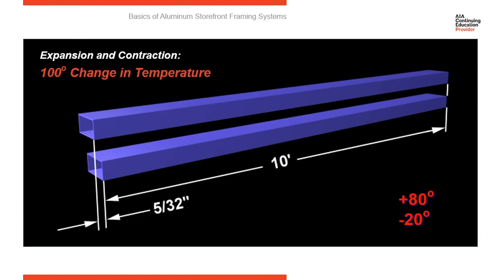Think about a nice spring or fall evening when it drops pretty cool during the night, but then the next day the sun comes up bright on a south-facing elevation with dark-finished aluminum. It's going to absorb a lot of heat and have a huge swing in temperature. And again, over a 10-foot section, that'll grow 5/30ths of an inch.